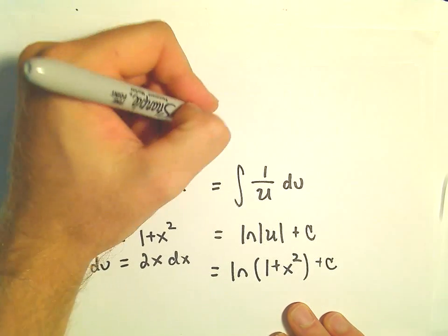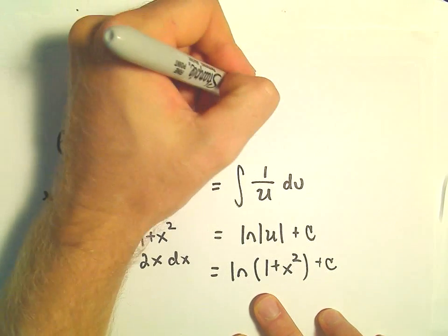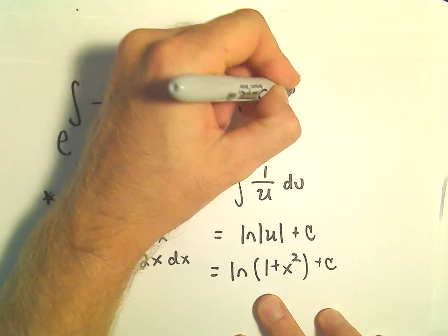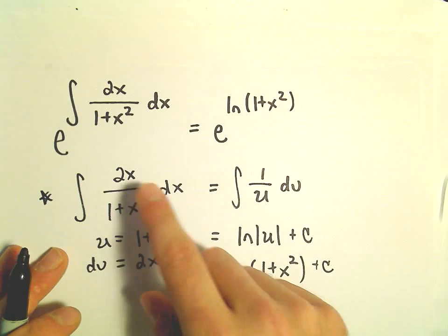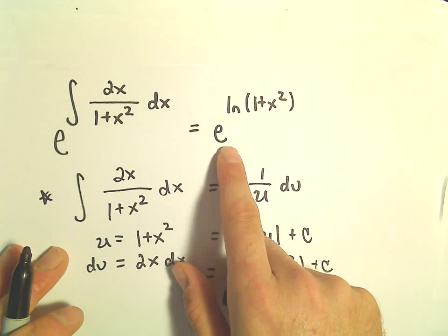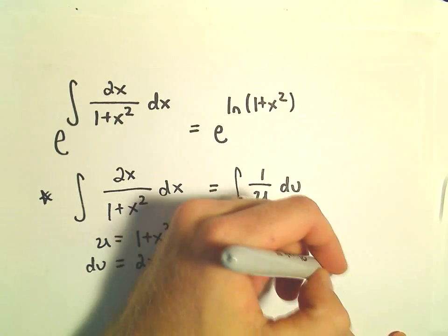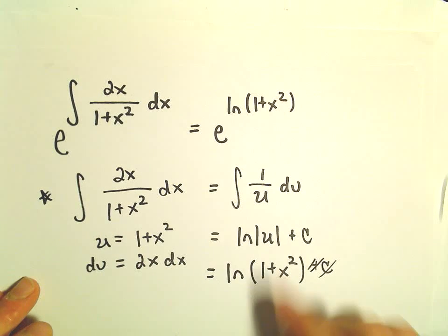Okay, so really when we integrate we'll get e to the natural logarithm of 1 plus x squared. So again, we're trying to find a particular integrating factor. It doesn't have to be the most general. So again, we don't have to worry about the plus c here.